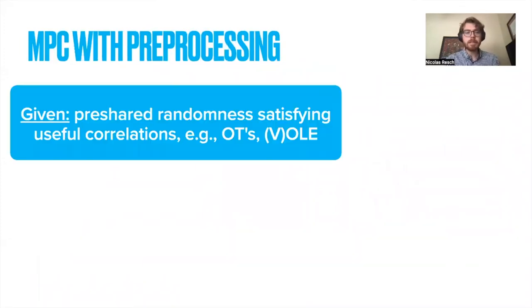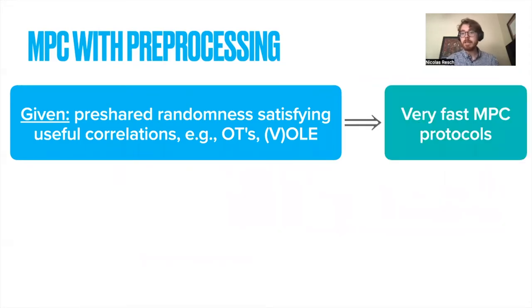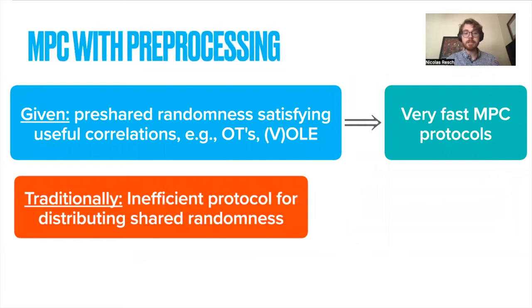This work will fit into the MPC with preprocessing paradigm. It's been known for many years that if Alice and Bob were given some pre-shared randomness which satisfies some useful correlations, say from a trusted dealer, then we could obtain very fast, even information-theoretically secure MPC protocols, basically by going gate by gate through a circuit describing the function they wish to compute and consuming the randomness as required. However, the traditional methods for actually sharing this required pre-shared randomness are very inefficient.